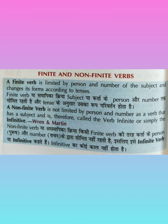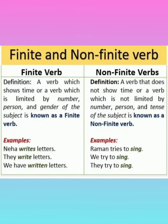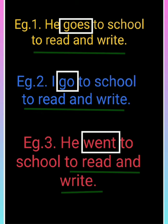Finite verb kya hai? Yeh waisa verb hai jo sentence ke number ya person — agar subject first person hai to uska form alag hoga, second person hai to form alag hoga, singular aur plural alag hota hai — aur tense ke saath bhi badalta hai. Present tense mein alag, past tense mein alag. Toh yeh finite verb hai. Jo verb person, number aur tense ke saath nahi badalta, woh non-finite verb hai, jise hum infinitive verb kehte hain. So in this sentence, 'He goes to school to read and write.'